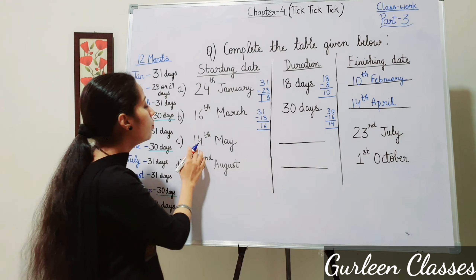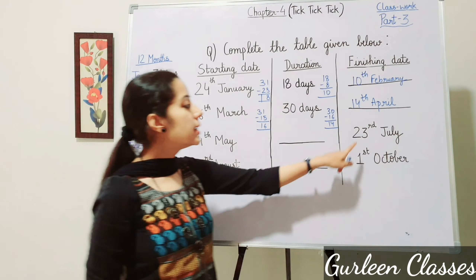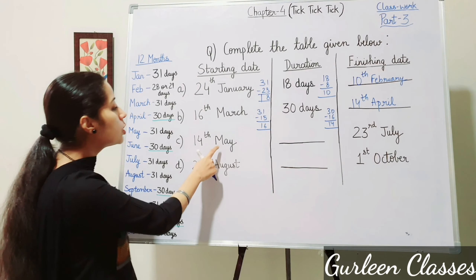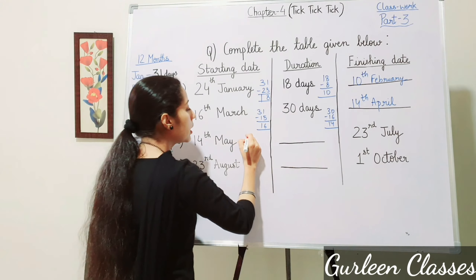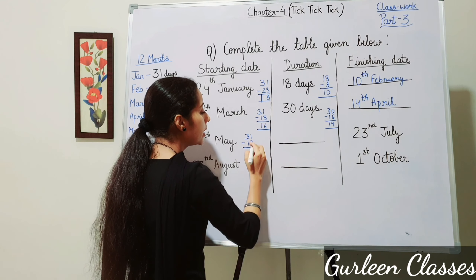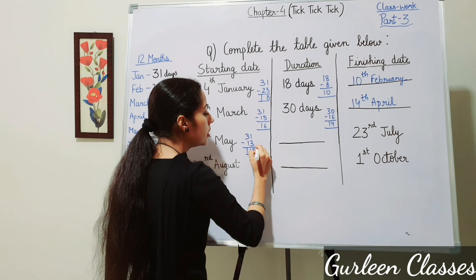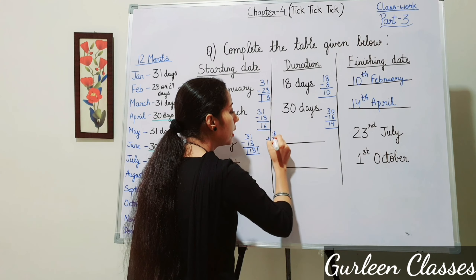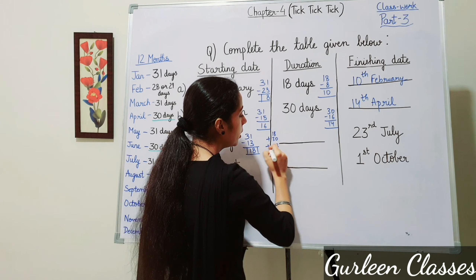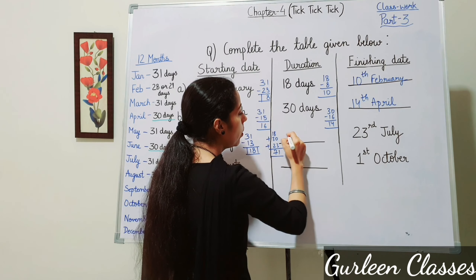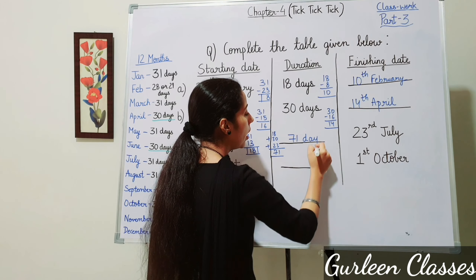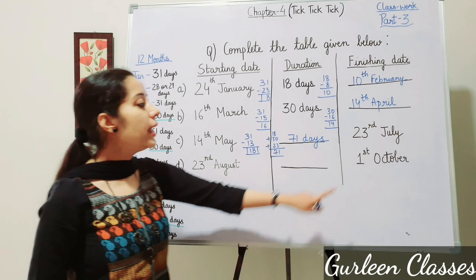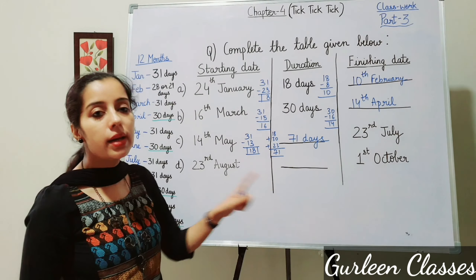Part C: starting date 14th May, finishing date 23rd July — find the duration. May has 31 days: 31 minus 13 equals 18 remaining days in May. June has 30 days. Add 23 days of July: 18 plus 30 plus 23 equals 71 days.